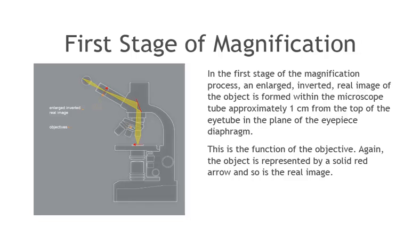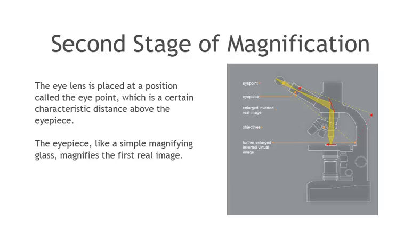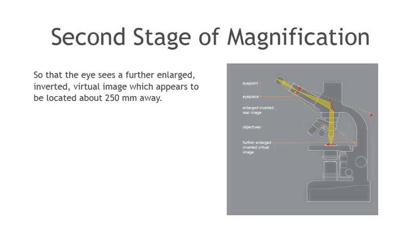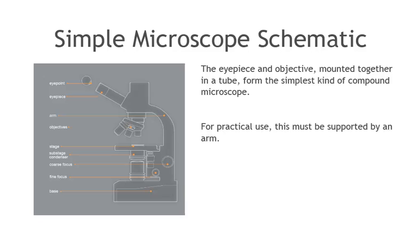The eye lens is placed at a position called the eye point, which is a certain characteristic distance above the eyepiece. The eyepiece, like a simple magnifying glass, magnifies the first real image so that the eye sees a further enlarged, inverted, virtual image, which appears to be located about 250 millimeters away. It is conventional to represent a virtual image by dotted lines. The eyepiece and objective, mounted together in a tube, form the simplest kind of compound microscope.